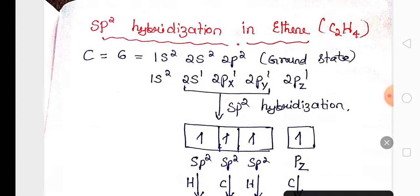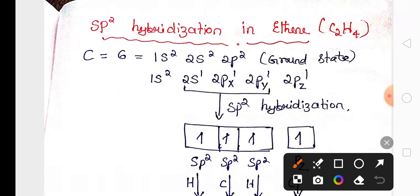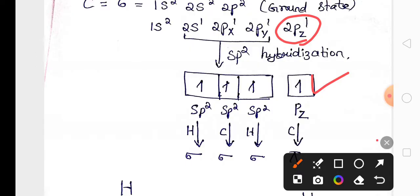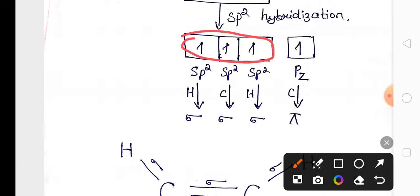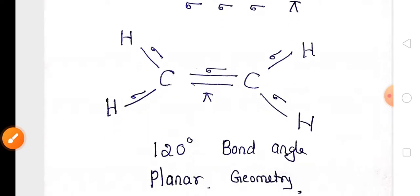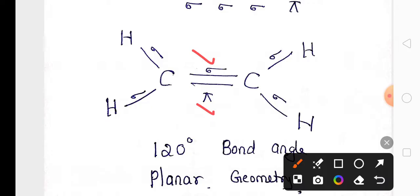Sp2 hybridization is also seen in ethene (C2H4). In the excited state, one s orbital and two p orbitals of carbon undergo sp2 hybridization to give three sp2 hybrid orbitals, leaving one p orbital unhybridized. One sp2 hybrid orbital axially overlaps with the other carbon to form a sigma bond, and the remaining two sp2 hybrid orbitals overlap with s orbitals of hydrogen. The unhybridized p orbitals of each carbon undergo sideways overlap to form a pi bond. Each carbon is bonded to two hydrogen atoms, with a bond angle of 120° and planar geometry.